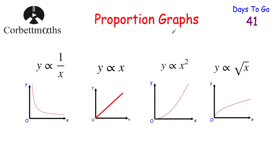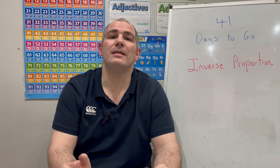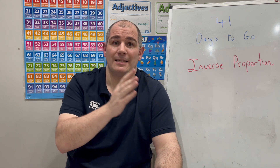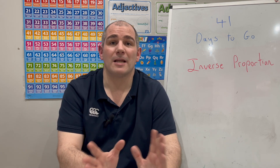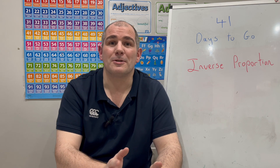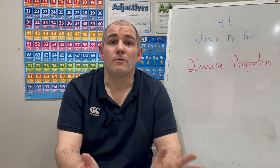Let's look at the proportion graphs. Y proportional to X is a straight line through the origin. Y proportional to X squared curves like a quadratic. Y proportional to √X curves more gradually. And for inverse proportion, as X increases Y decreases — it looks like a reciprocal graph. It's important to know what these proportion graphs look like. This video covered inverse proportion; practice questions are in the description. The next video will be at 3 o'clock tomorrow — see you then!